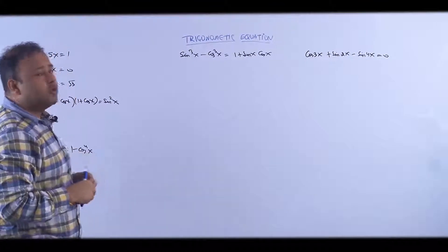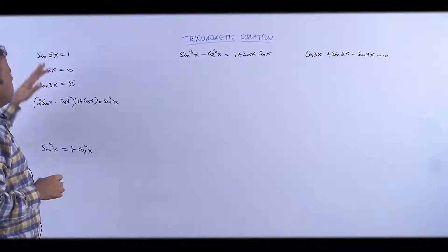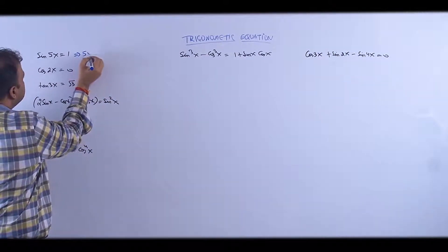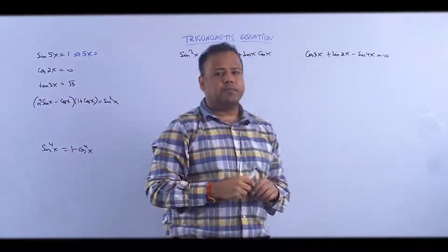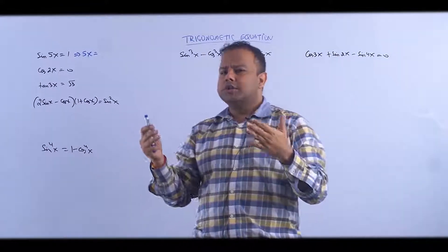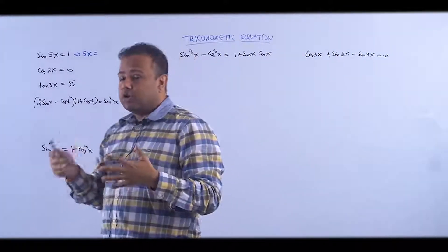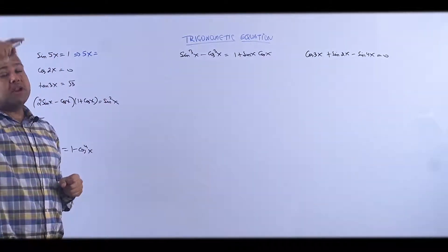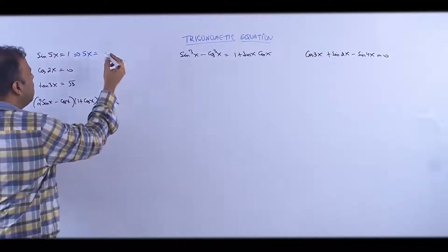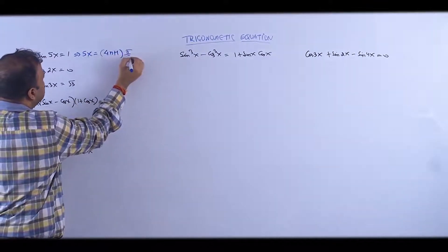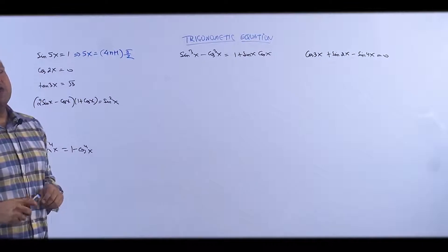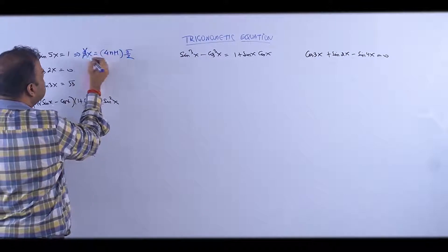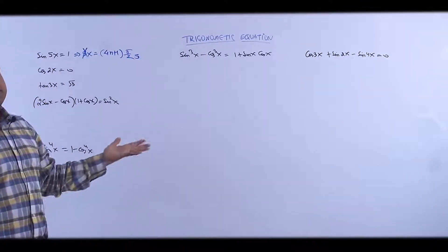Now we have more questions. Starting with simple ones: sin(5x) = 1. The value of 5x using the quadrant system — sin = 1 happens at 90 degrees, which we call (4n+1)π/2. So x ka value ho jayega (4n+1)π/10.